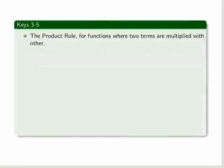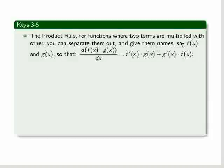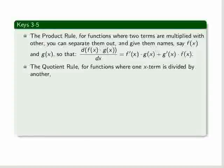The product rule. For functions where two terms are multiplied with each other, you can separate them out and give them names, say f of x and g of x, so that the expression as shown is the product rule. So you differentiate the first function f of x multiplied by g of x undifferentiated, and then add it to g of x differentiated multiplied by f of x undifferentiated.